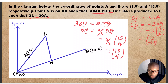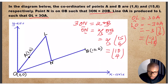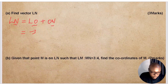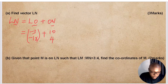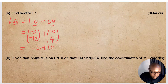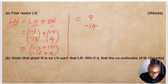Now having both vectors, we substitute: LN = LO + ON = (−3, −18) + (10, 4). Adding: −3 + 10 = 7, and −18 + 4 = −14. So vector LN equals (7, −14).